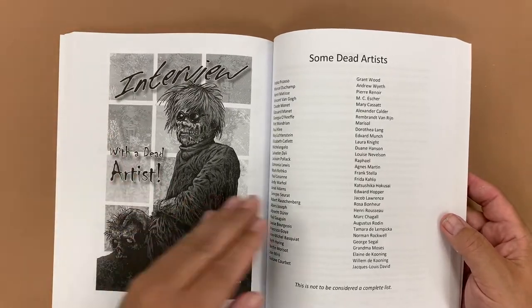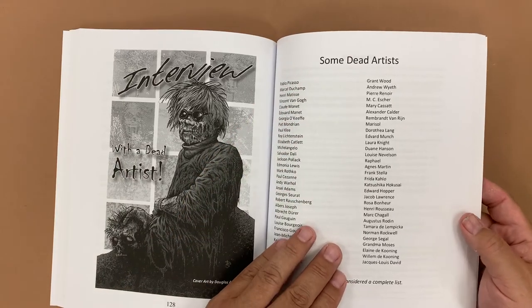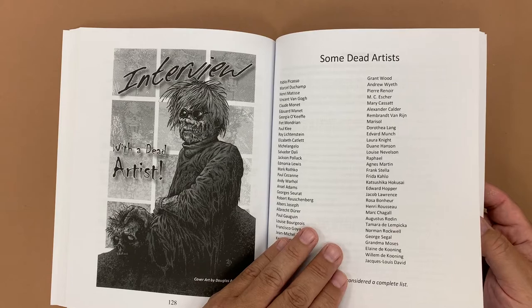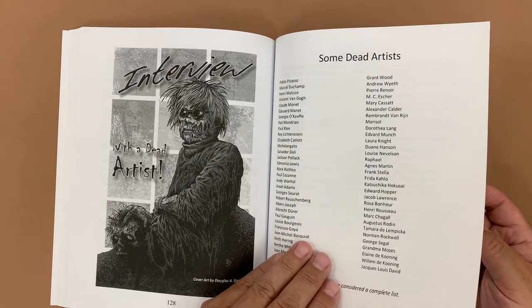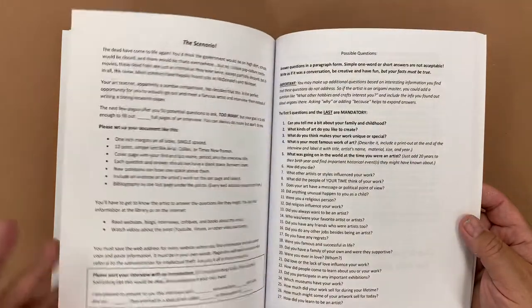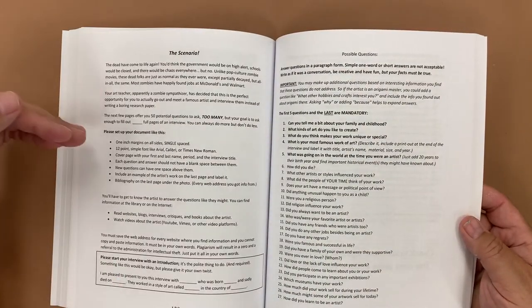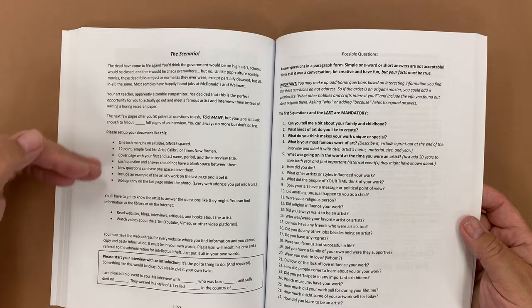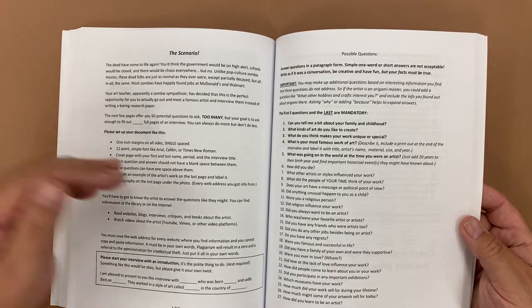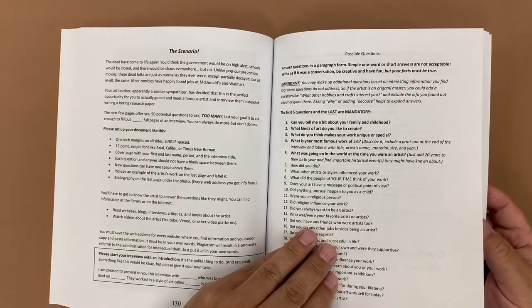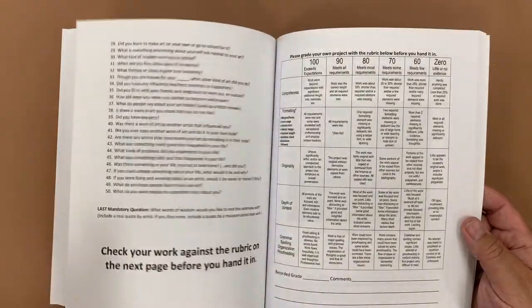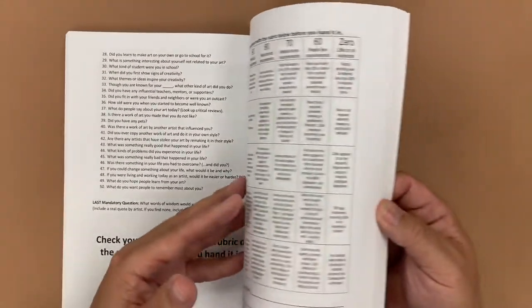I call this interview with a dead artist, where they find a famous artist who has passed away and they do an interview format kind of research paper, which then eliminates the problem of plagiarism because students can then write in first person. I give them the scenario, kind of the requirements about one-inch margins, 12 point font, etc. And then 50 potential questions they could ask for an interview. Most students need only about 10, but there's a lot more there than they actually need, and of course a rubric to kind of finish it up.